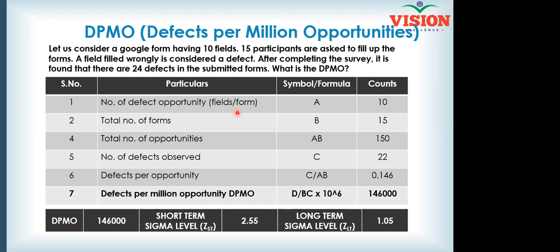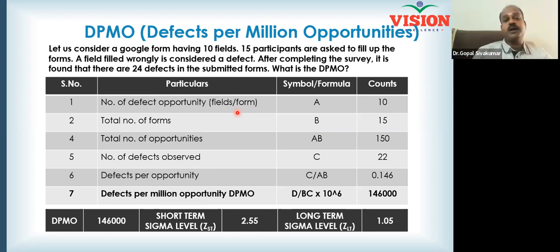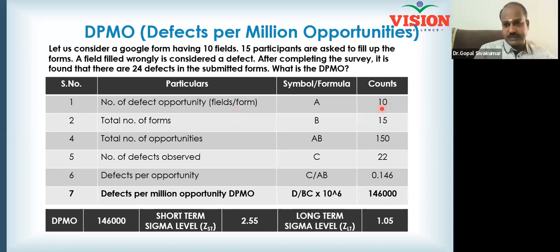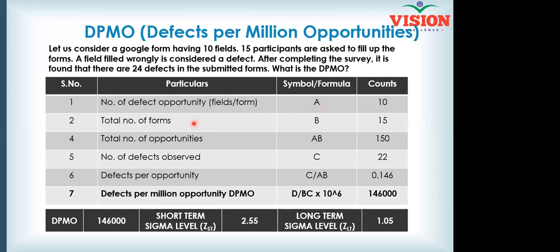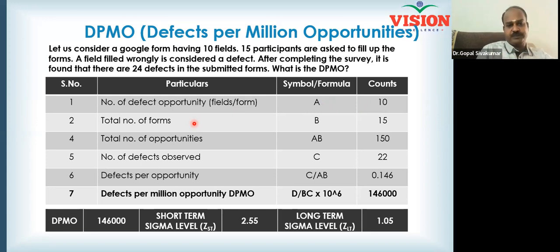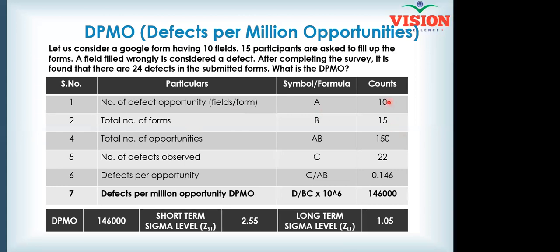When you have 4 fields, if you score 100 fields you can pass. If you look at the form, you have 25 names, so you have 15 names. Then if you look at the number of forms filled up, you will have 15. If you look at the form, there is a 10-defect opportunity and a number of 15.